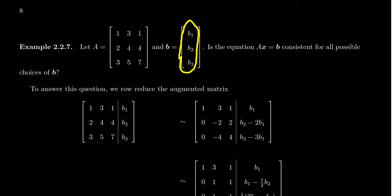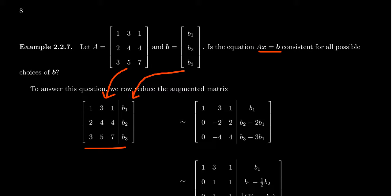By doing this generically — that is, we don't know what B is; B is just b1, b2, b3 — we're going to solve this linear system generically and see what happens. To solve the matrix equation Ax equals B, we solve the associated system of linear equations represented by the augmented matrix, where A is the coefficient matrix and the vector B is the augmented column. Our pivot position will be at (1,1), which is already a 1. We take the second row and subtract 2 times row 1, and take the third row and subtract 3 times row 1.